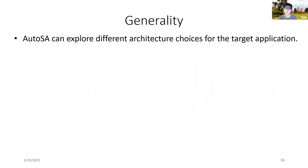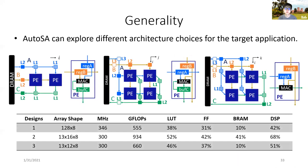Next, with the general compilation framework of AutoSA, we are also able to explore different choices of systolic architecture. As an example, here we show three different systolic arrays generated by AutoSA for matrix multiplication. The first one is a one-dimensional systolic array. Data of matrix C are accumulated inside each PE. The second one is a two-dimensional systolic array. Data of matrix C are accumulated inside each PE, and the data of matrix A and B are reused across PEs.